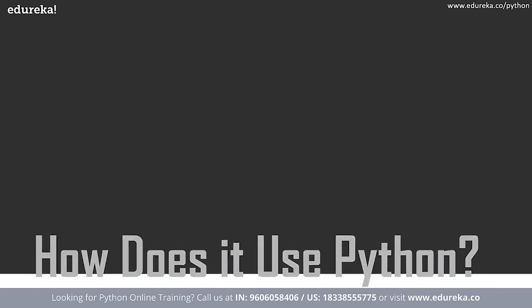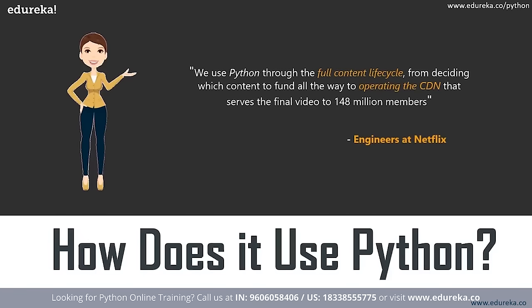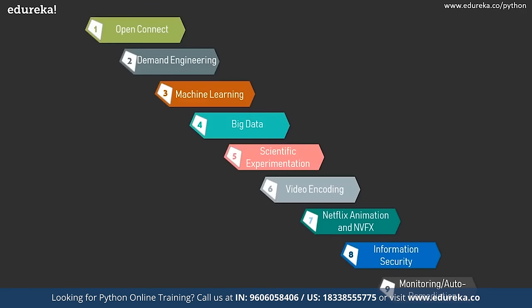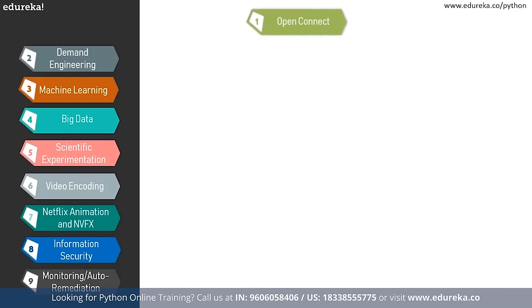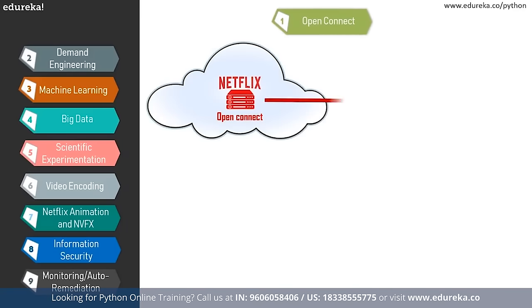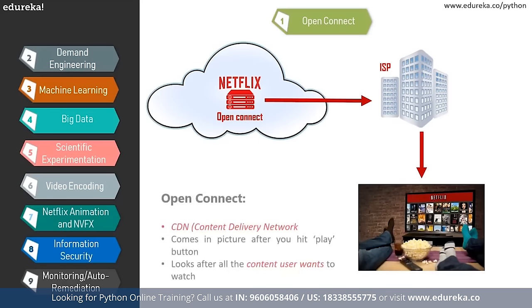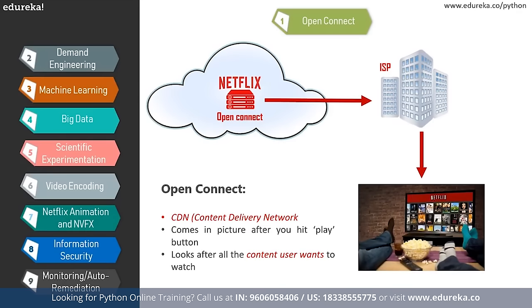Engineers at Netflix admit they use Python for the full content lifecycle — from deciding which content to fund all the way to operating the CDN that serves the final video to 148 million subscribers. The CDN Netflix uses is called Open Connect. When you hit the play button, all content delivered to the end user is handled by this CDN, which requires various software designed, built, and operated using Python.